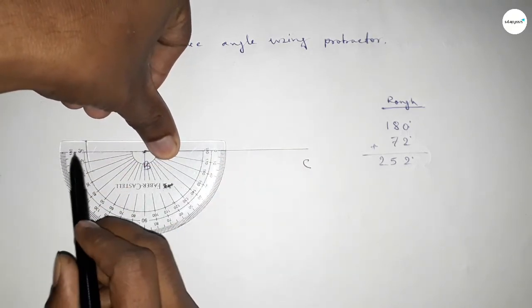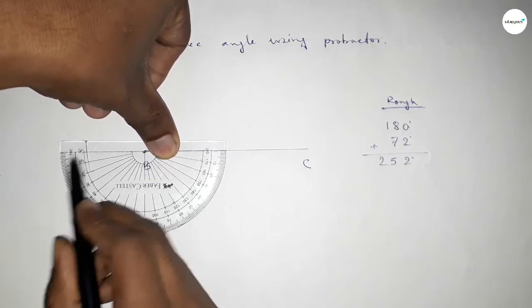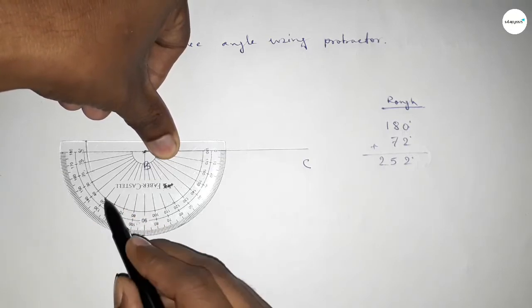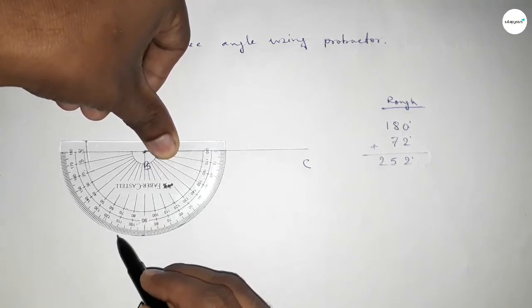And this is also starting: 0, 10, 20, 30, 40, 50, 60, 70, 71, 72. So this is 72 degree.